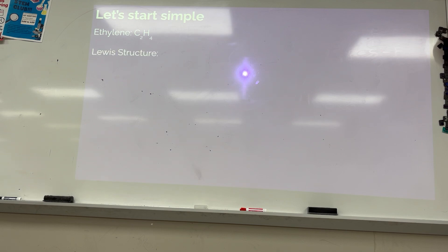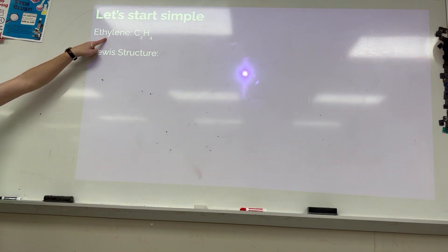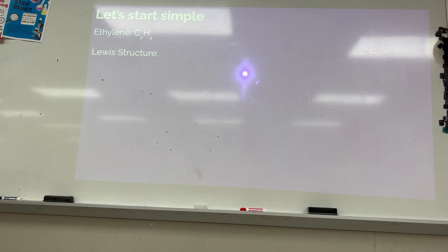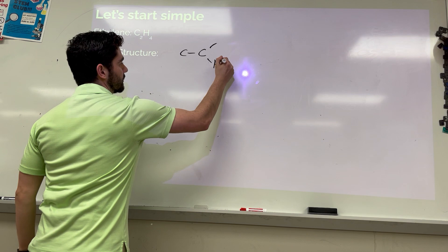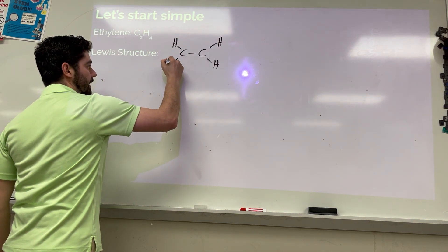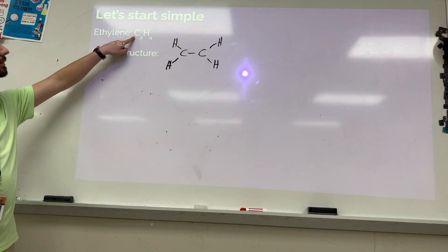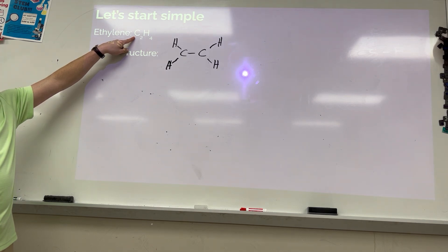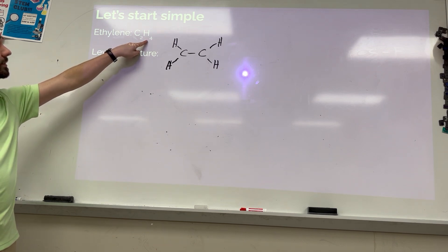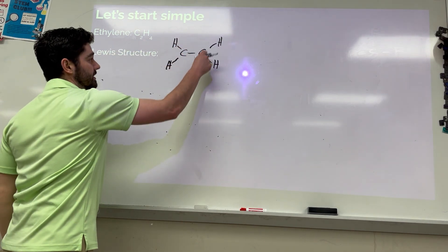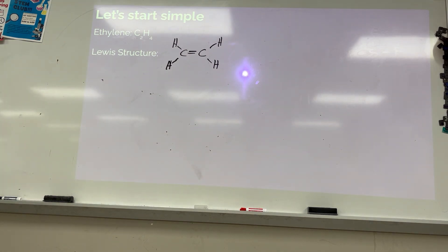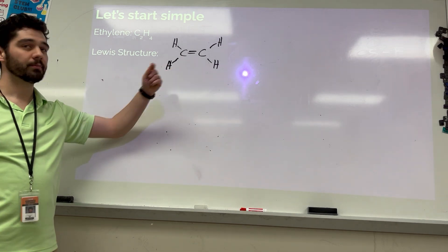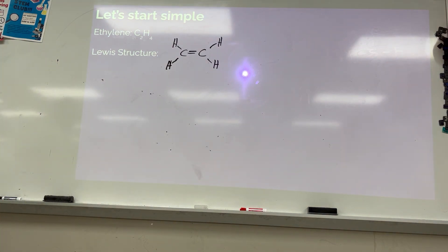Let's start with a simple molecule that may or may not have a double bond: ethylene, C2H4. 'Ethyl' means two carbons; '-ene' means double bond — that's an organic chemistry thing. I've got two carbons in my skeleton. Carbon has four valence electrons, so with two carbons and four hydrogens I have 12 total valence electrons. Everyone gets an octet except hydrogen, and that gives me my molecule with a double bond.